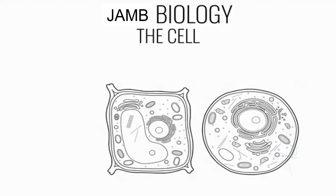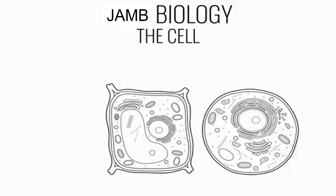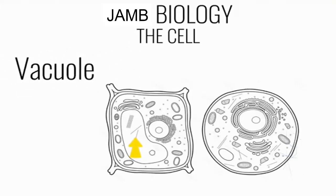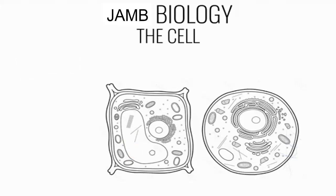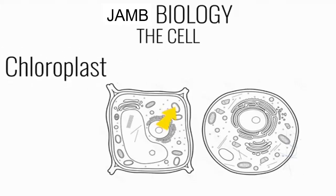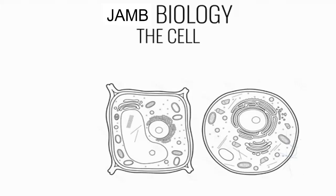Plants have an additional cell wall which covers the cell membrane. The cell wall is a rigid structure made up of cellulose, and it supports and strengthens the plant. Plants also have a permanent vacuole, centrally placed, which contains cell sap — a weak solution of sugar and salts. Chloroplasts are present for photosynthesis, as they contain chlorophyll, which gives the plant its green color.